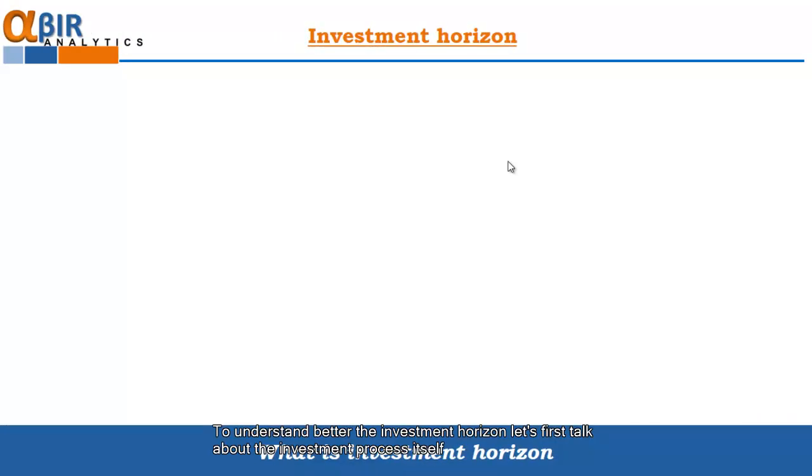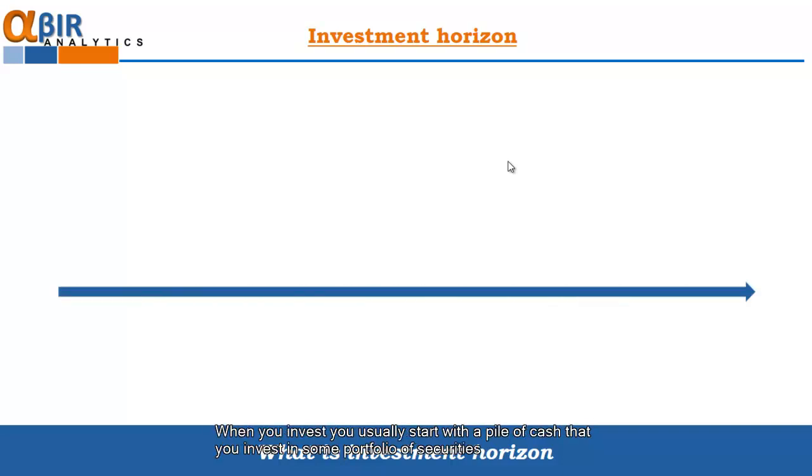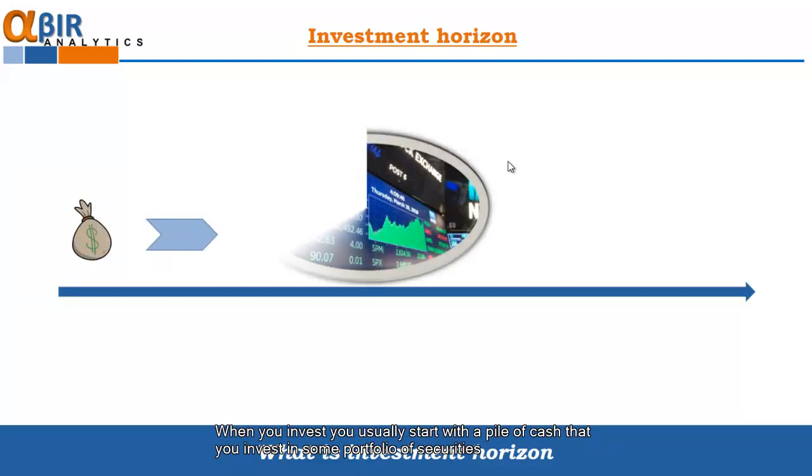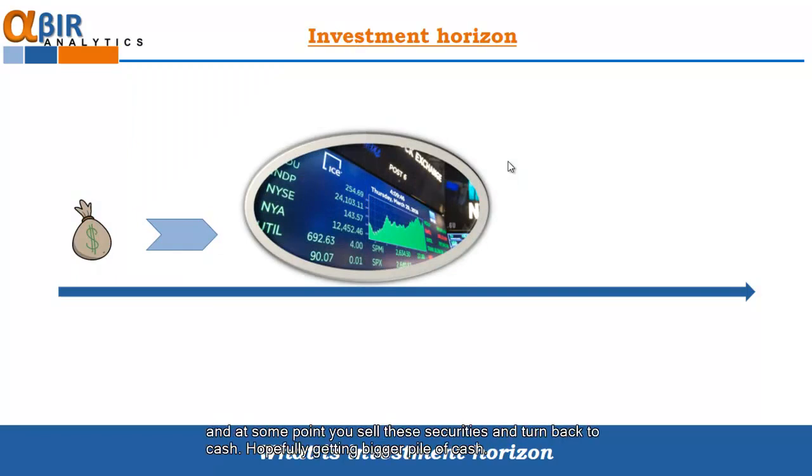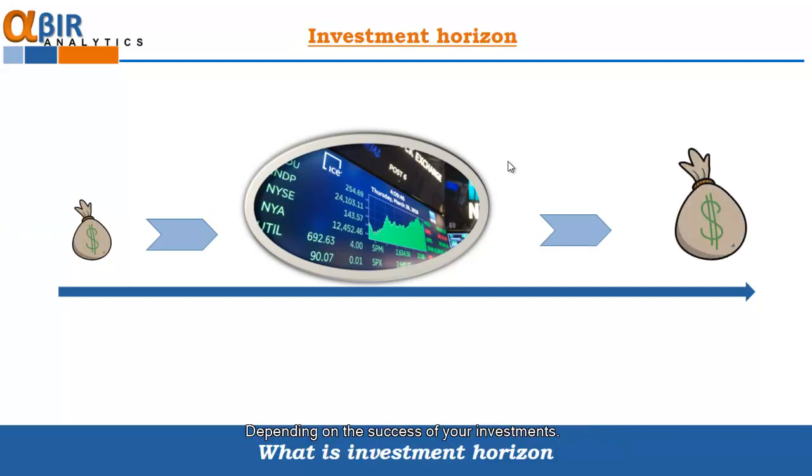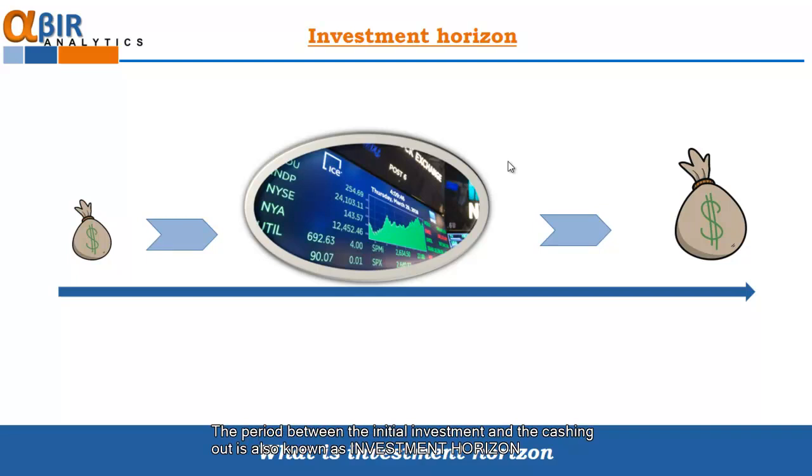To understand better the investment horizon, let's first talk about the investment process itself. When you invest, you usually start with a pile of cash that you invest into some kind of a portfolio of securities. And at some point, you'll sell these securities and turn back to cash, hopefully getting a bigger pile of cash depending on the success of your investments. The period between the initial investment and the cashing out is also known as the investment horizon.